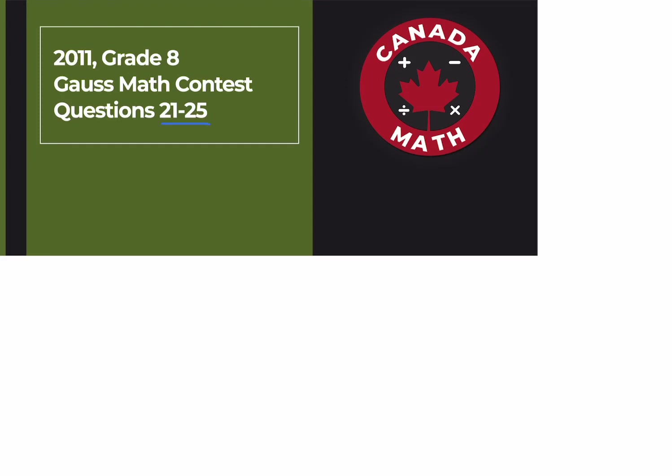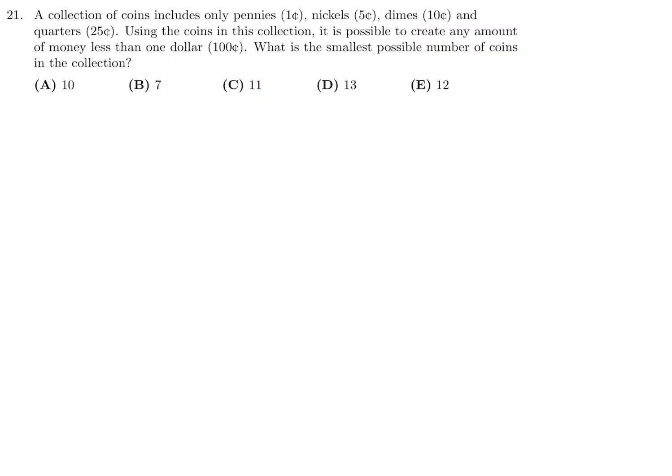Questions 21 through 25 on the 2011 Grade 8 Gauss math contest. A collection of coins includes only pennies, nickels, dimes, and quarters. Using the coins in this collection, it is possible to create any amount of money less than $1. What is the smallest possible number of coins? To create sums anywhere from zero to four, you need at least four pennies — those are mandatory.